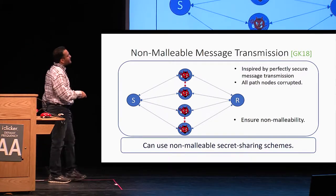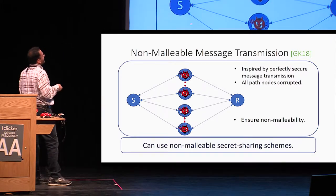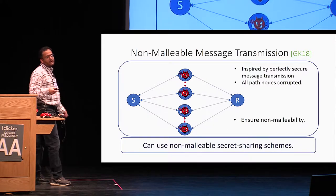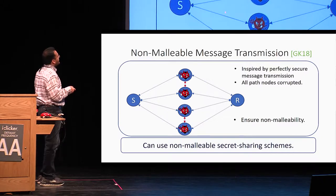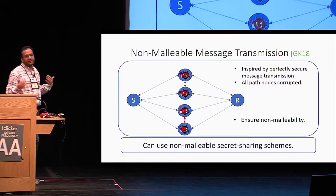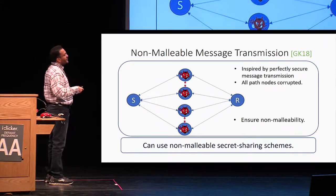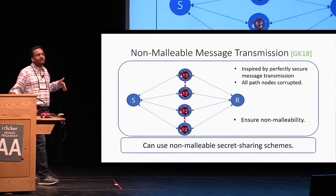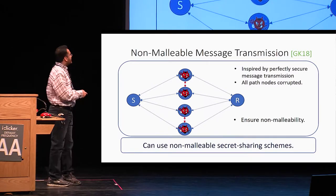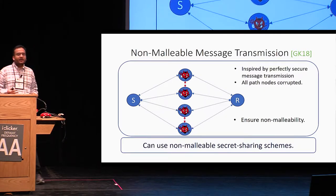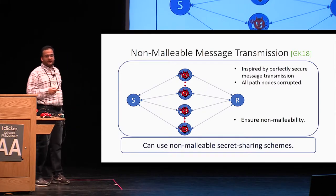One can directly use non-malleable secret sharing schemes, dividing the message into four parts using a scheme secure against individual tampering. A stronger setting is when adversaries may also be connected to each other — they might pool their shares before tampering. In that case, we might need non-malleable secret sharing with joint tampering. Various tampering models can be considered.